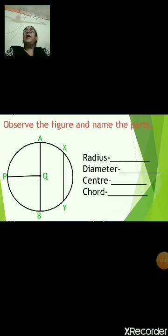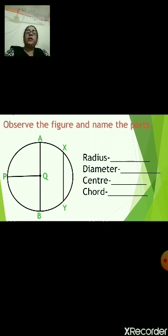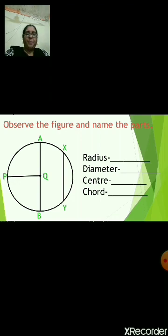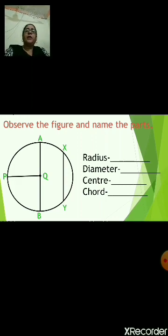Observe the figure and name the parts. In this figure you can see many names written on the circle, so you have to see the question and answer it. What is the radius? It is PQ. What is the diameter? AB. What is the center? Q. What is the chord? Name the chord in this circle — XY. Very good.